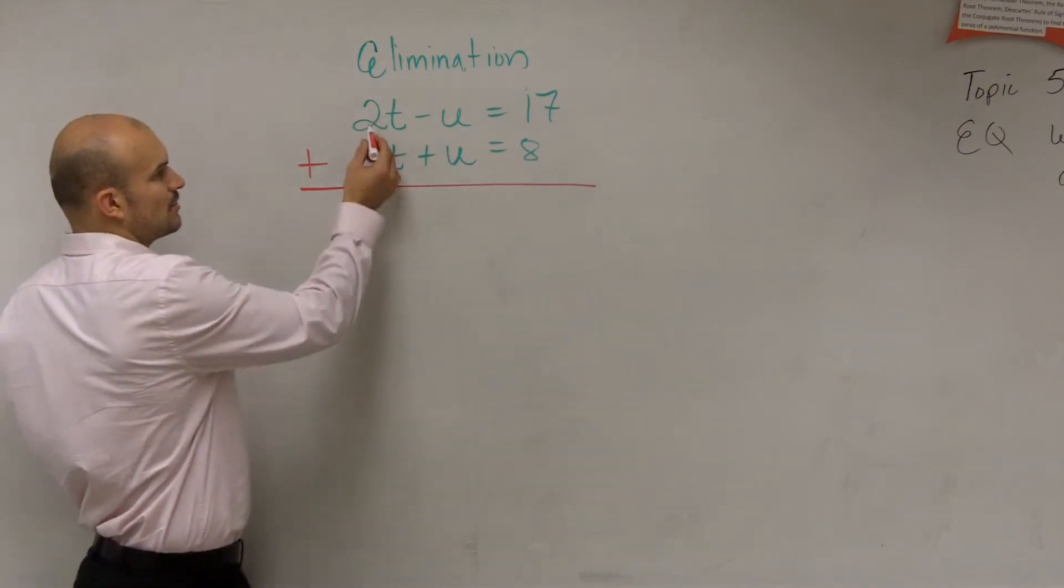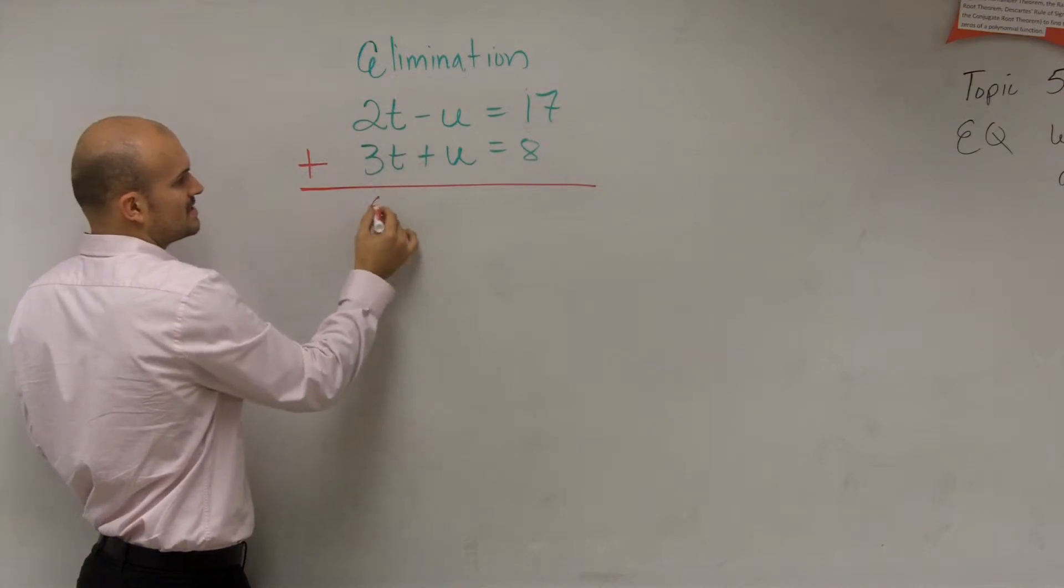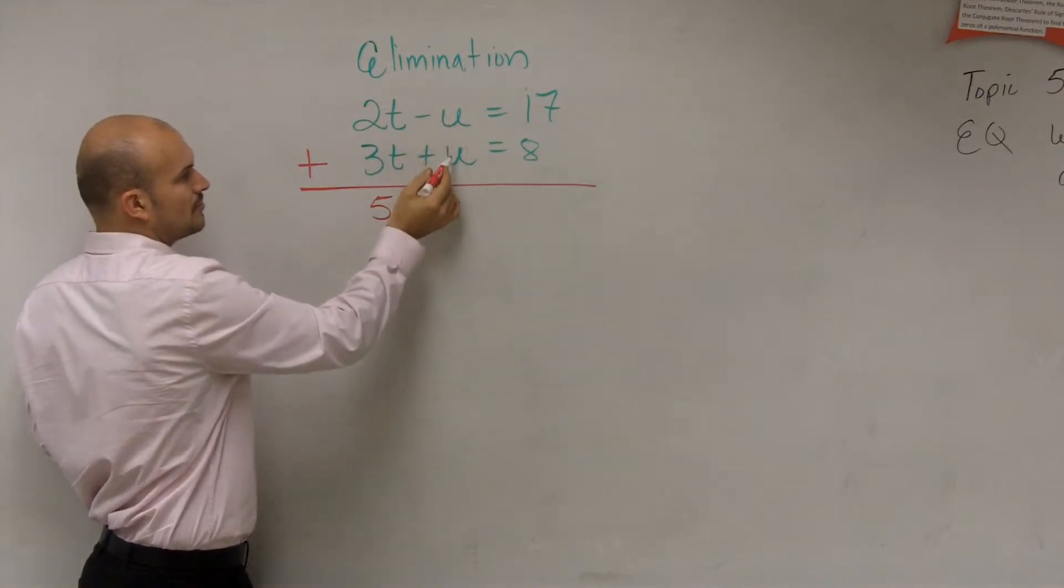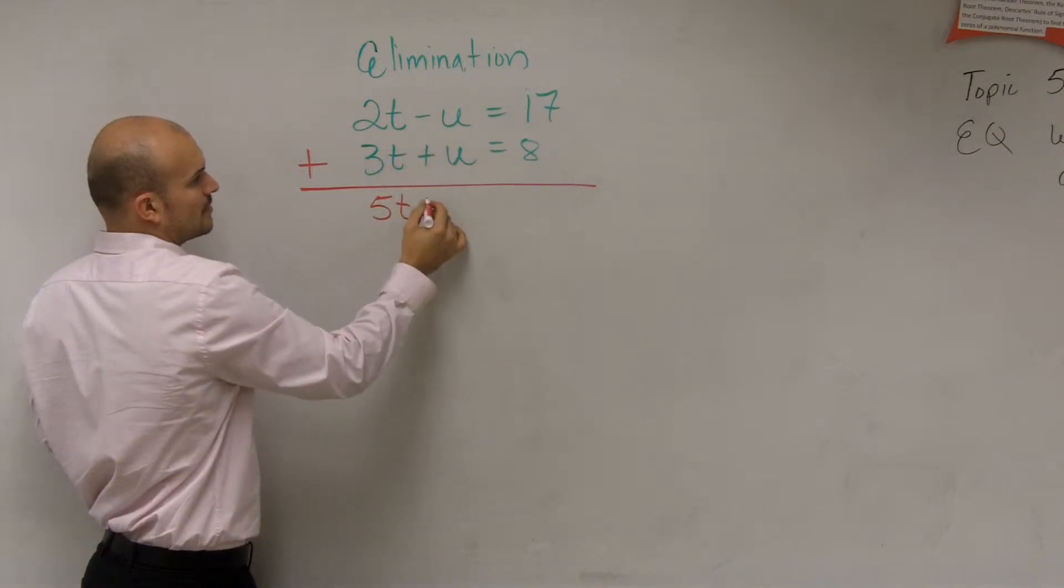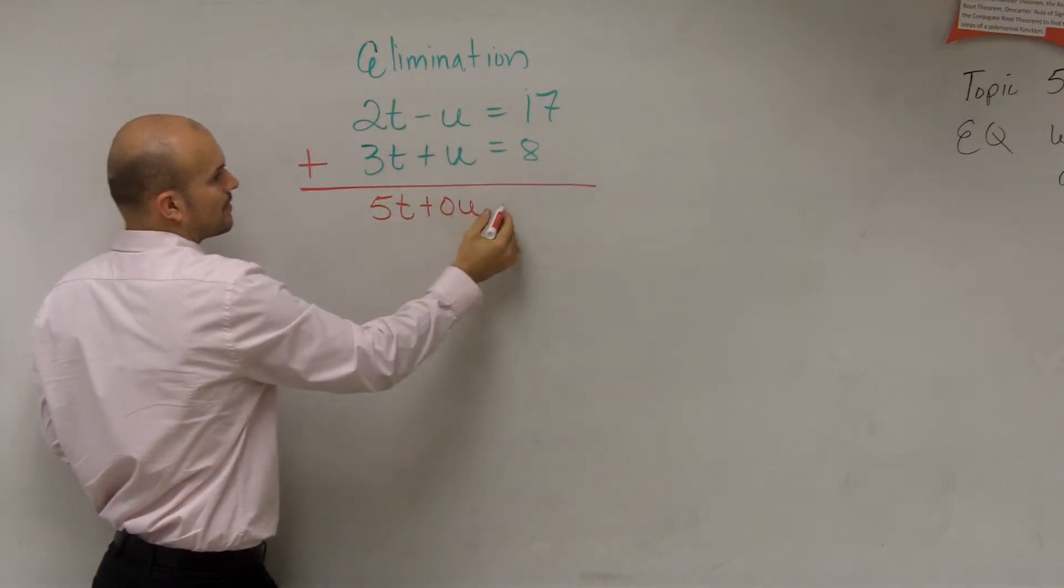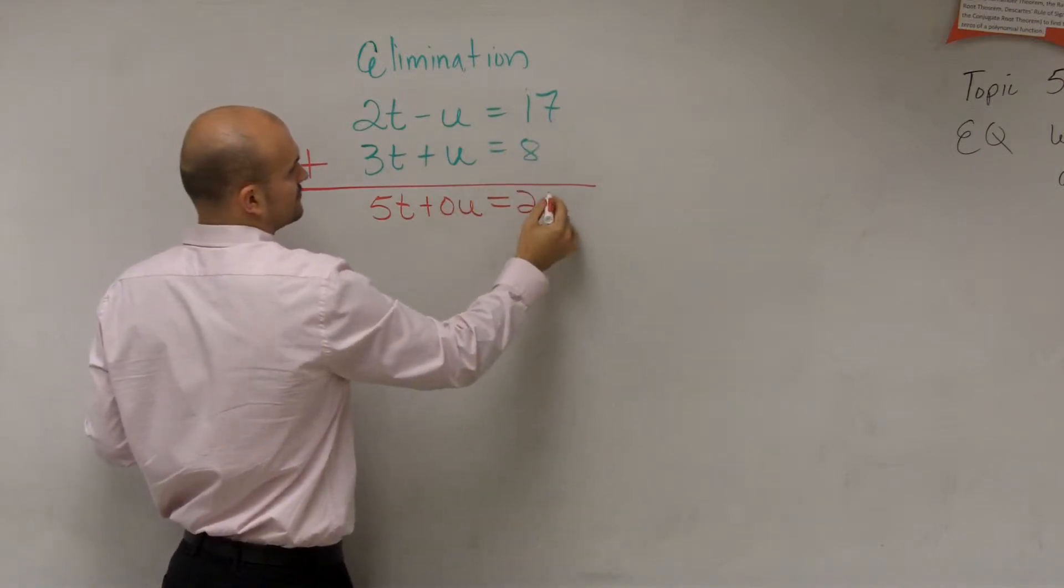So just combine them. What's 2t plus 3t? 5t. Negative u or negative 1u plus positive 1u is 0u. And then 17 plus 8... Wouldn't it just be nothing? Yeah.